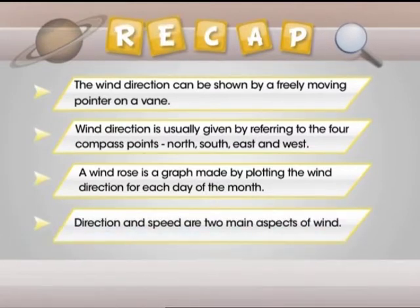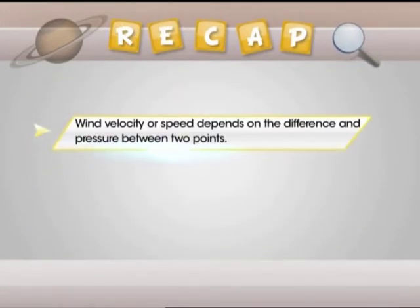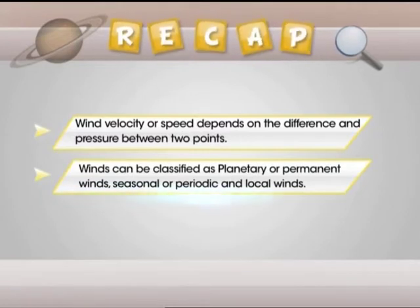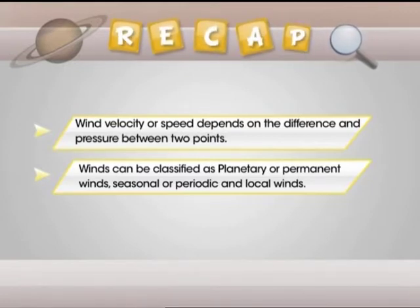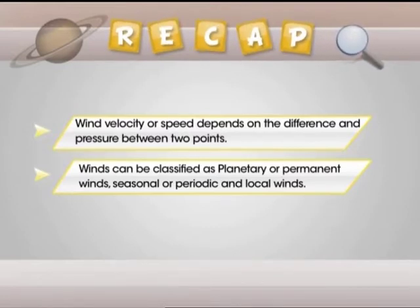Direction and speed are two main aspects of wind. Wind velocity or speed depends on the difference in pressure between two points. Winds can be classified as planetary or permanent winds, seasonal or periodic winds, and local winds. Planetary winds are caused by great global air currents. Seasonal winds reverse their direction periodically due to changes in atmospheric conditions. Local winds are caused by changes in temperature in local areas.